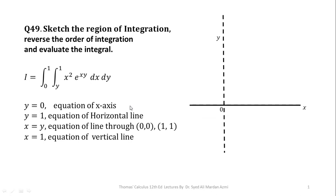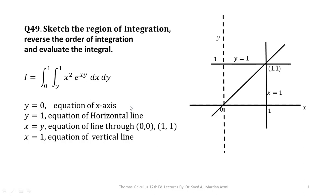After that, I have marked the x-axis, y-axis, and their point of intersection at the origin. Then I have plotted the line x equals 1, which is a vertical line passing through the point where the value of x is 1. Similarly, y equals 1 is a horizontal line passing through the point where the value of y is 1. In order to plot the line y equals x, I will join the points (0,0) and (1,1). So from here, you can see we have our region of integration as a lower triangle.